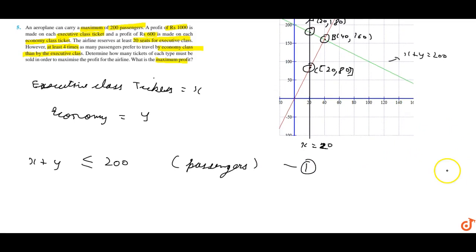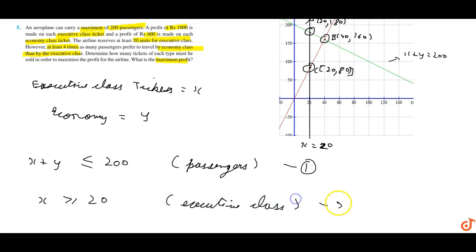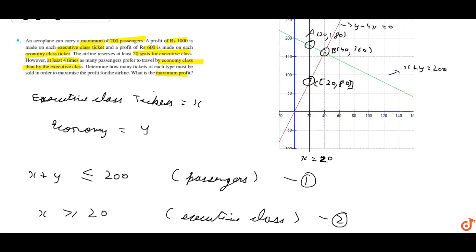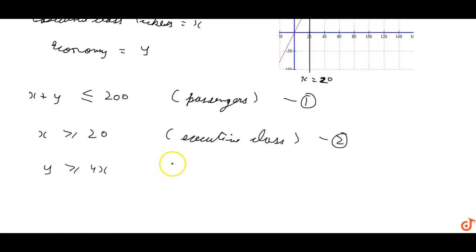The second constraint: the airline reserves at least 20 seats for executive class, so x is greater than or equal to 20. The third constraint: at least four times as many passengers prefer to travel by economy class than by executive class, so y is greater than or equal to 4x.